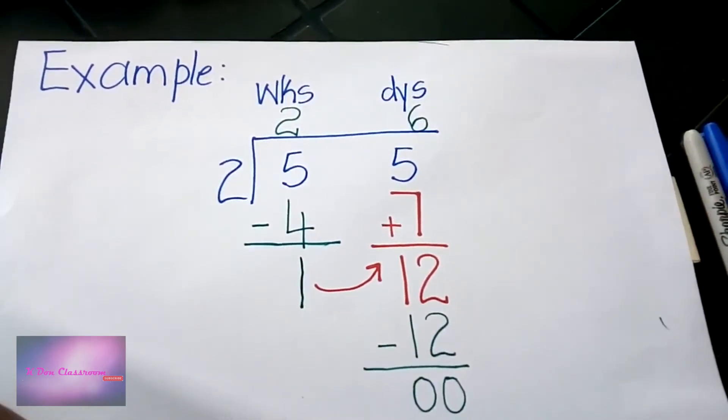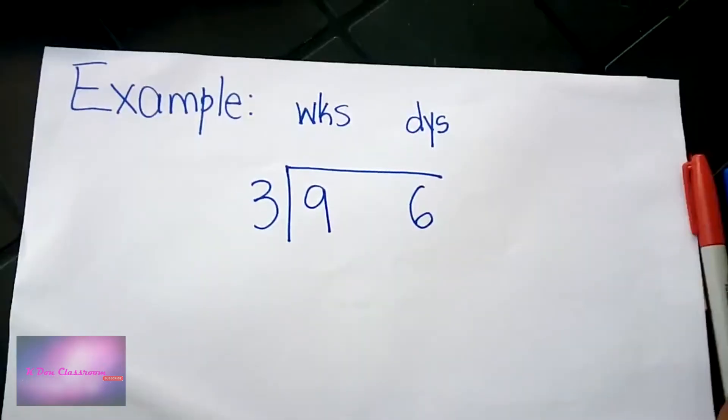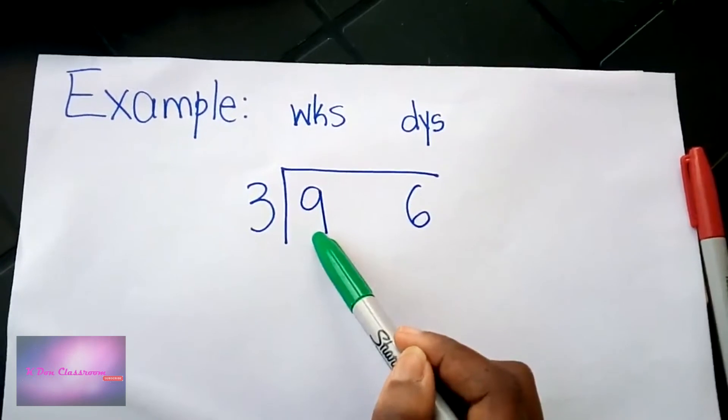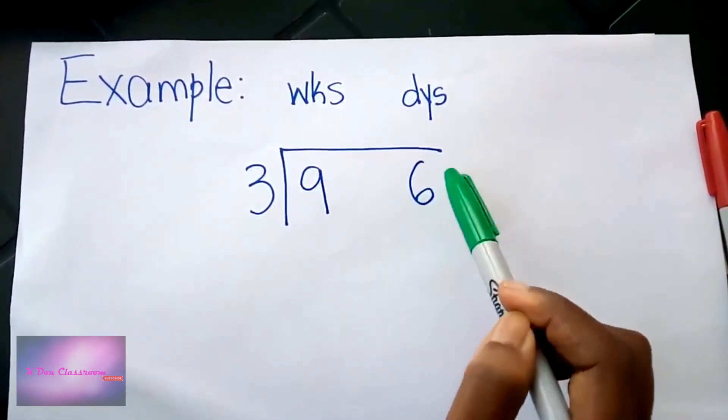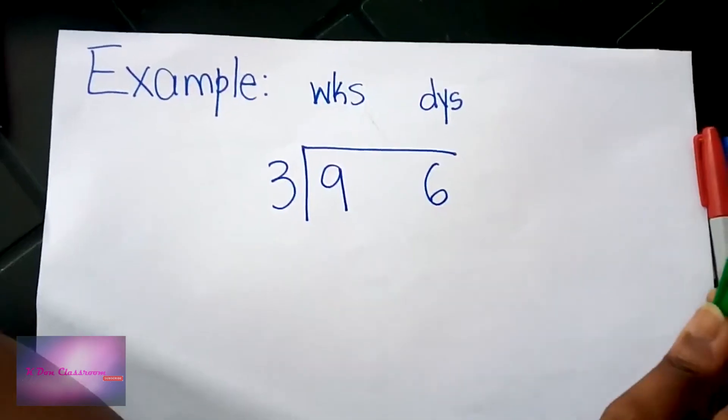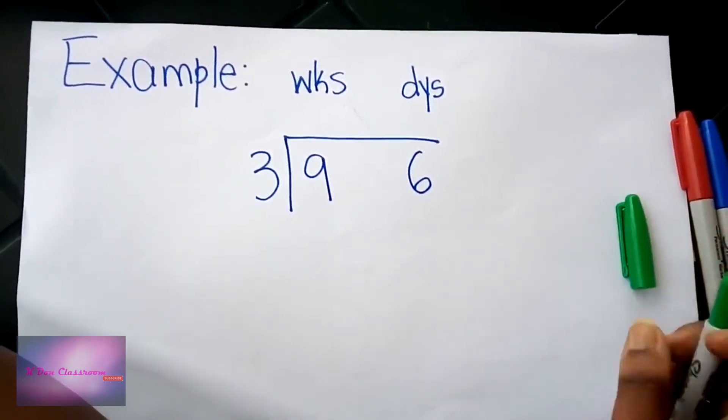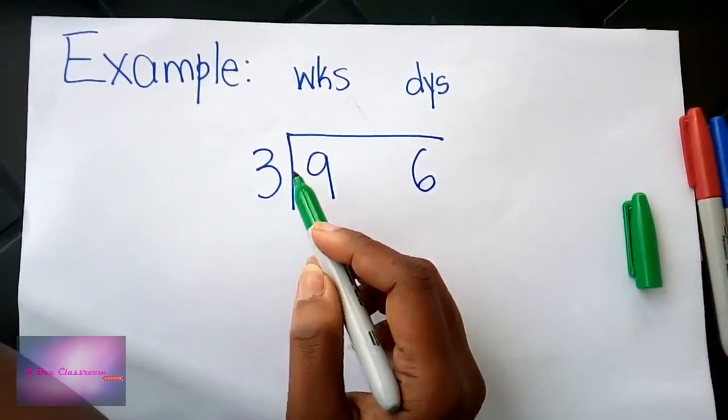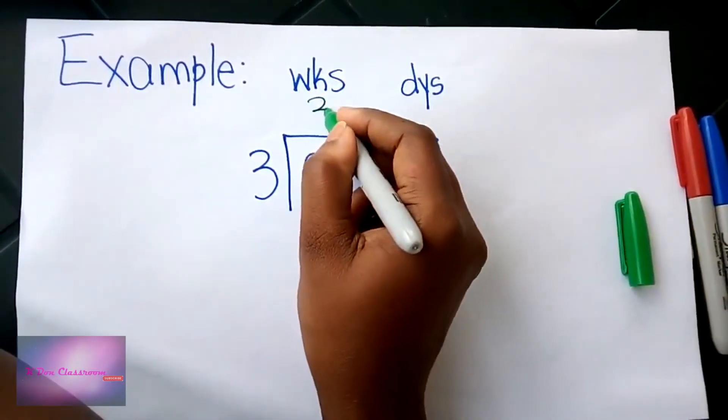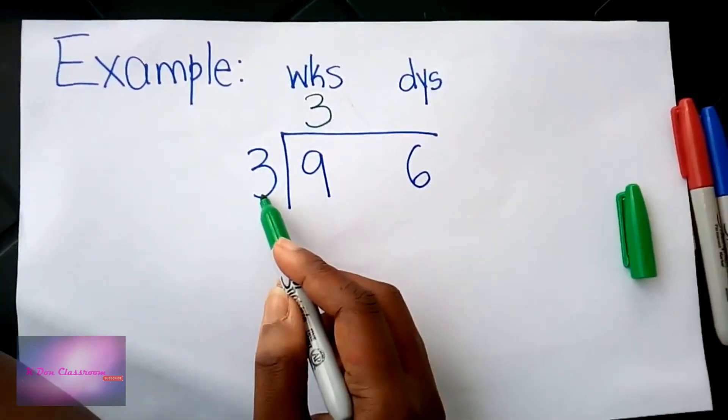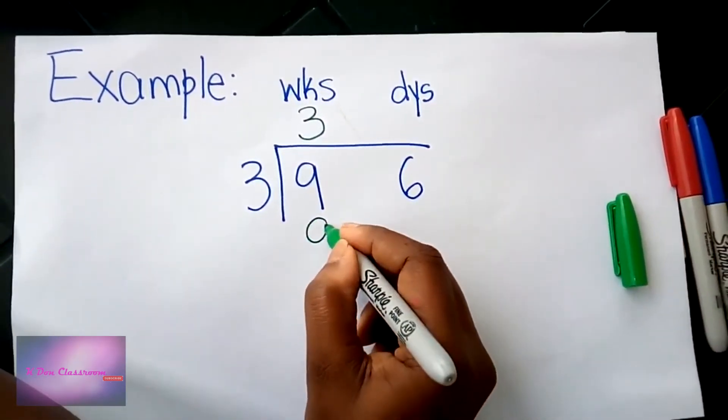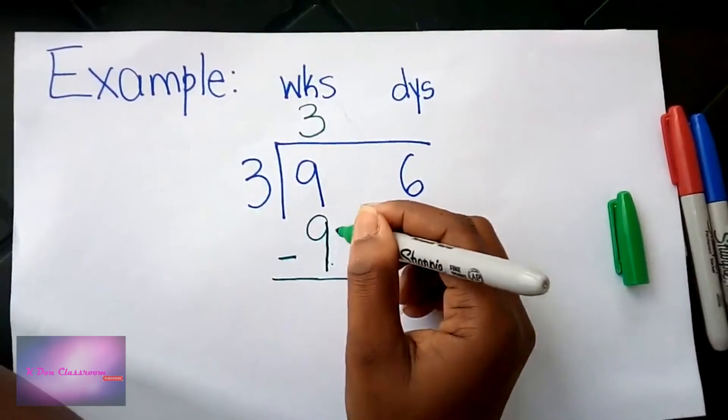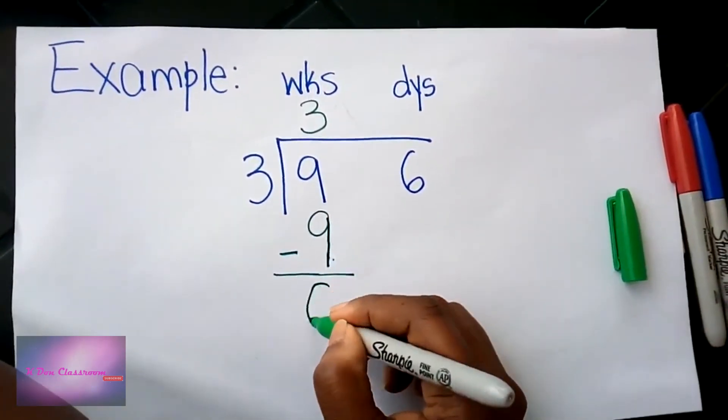Let us look at another example. We have nine weeks and six days divided by three. Let's divide. We have nine weeks, six days divided by three. Three into nine goes three times. Three multiplied by three will give us back nine.